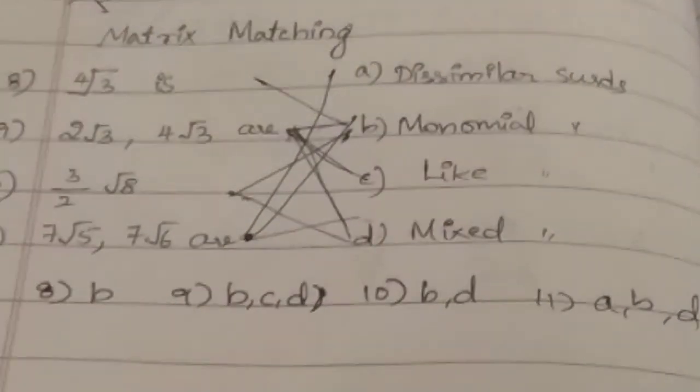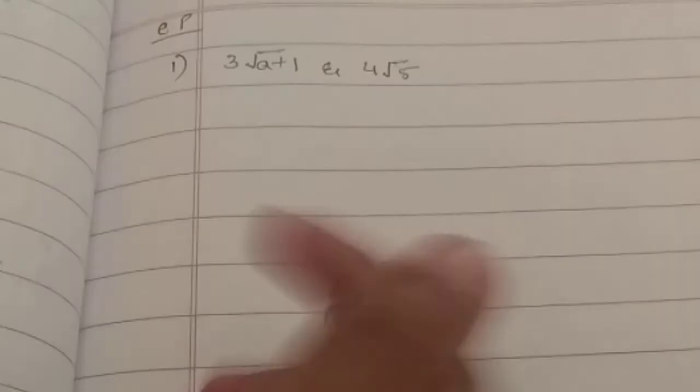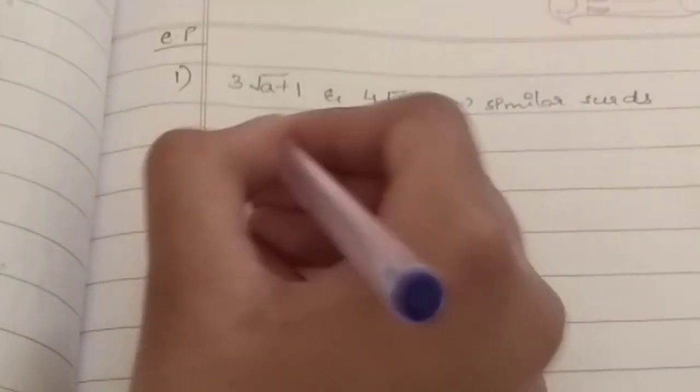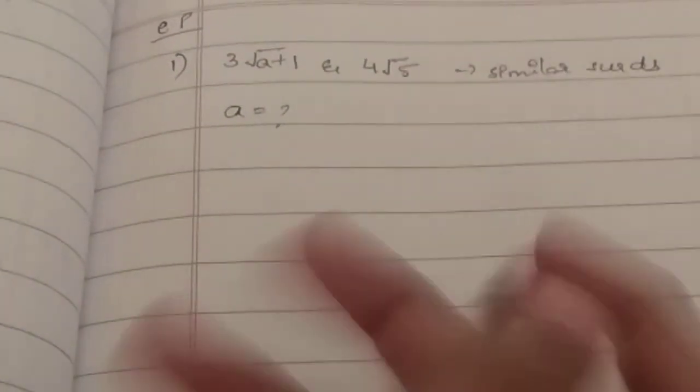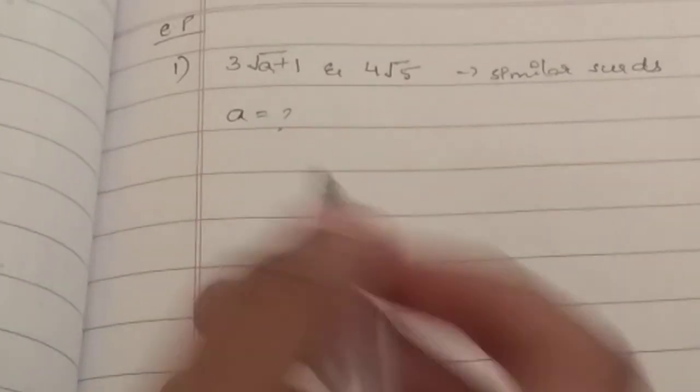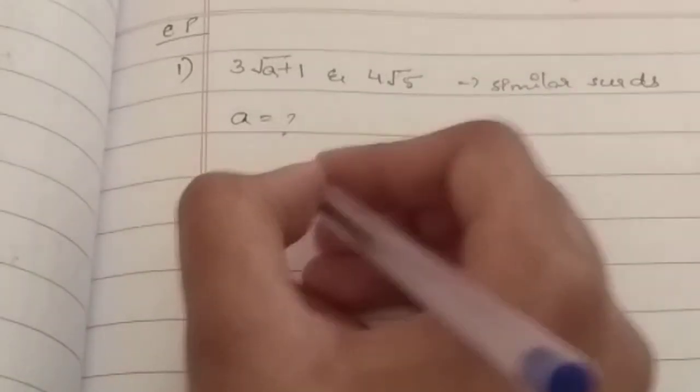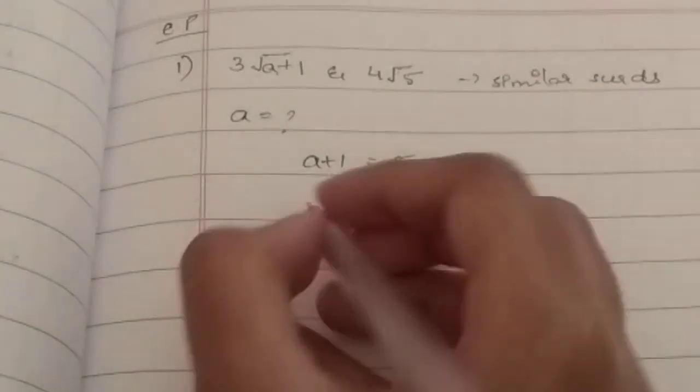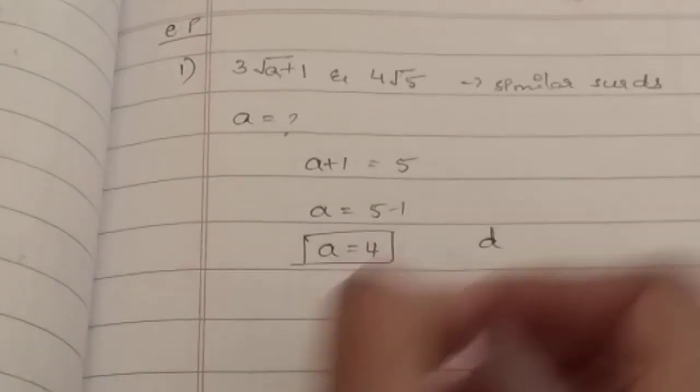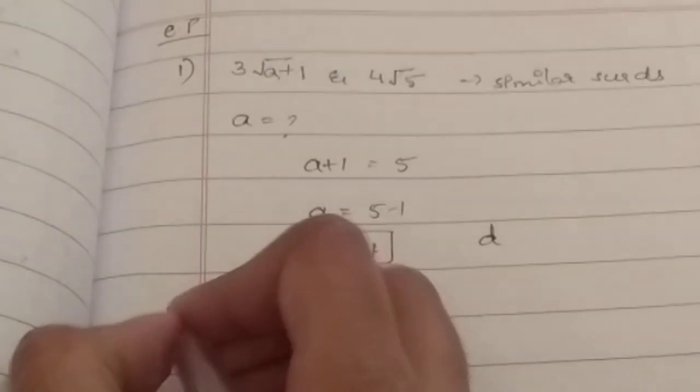Let's move on to Emerald Package. First question. If 3 root A plus 1 and 4 root 5 are similar surds, then what is the value of A is the question. It is very simple. When they are similar surds, you know, this value should be the same. Their rooted value must be the same. So A plus 1 must be equal to 5. A is equal to 5 minus 1. A is equal to 4, which is option D. That is clear, simple one, but question looks so complicated.